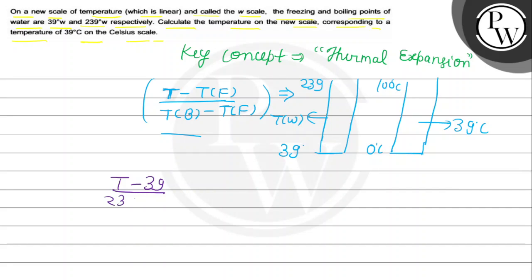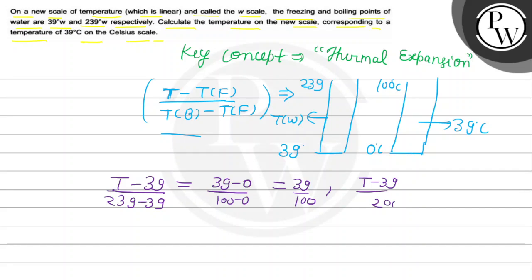Plugging in the values: T minus 39 upon 239 minus 39, which equals 39 minus 0 upon 100 minus 0. That gives us T minus 39 upon 200 equal to 39 by 100.